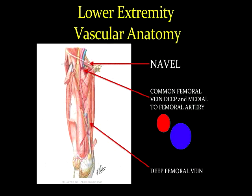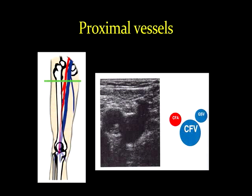Just a reminder about lower extremity vascular anatomy. In the femoral triangle, we think of the mnemonic from lateral to medial: nerve, artery, vein, empty space, and lymph node. Here we will usually see the common femoral vein deep and medial to the femoral artery. Proximally, we often see the greater saphenous vein coming immediately into the common femoral vein. This is a common area of deep venous thrombosis, as it's an area of higher turbulence due to bifurcation, and is an important area to visualize in our evaluation.